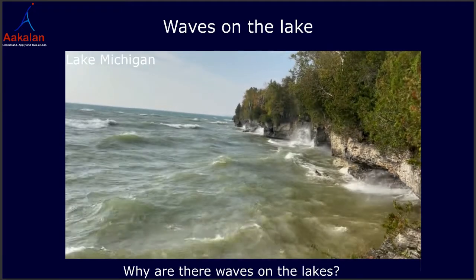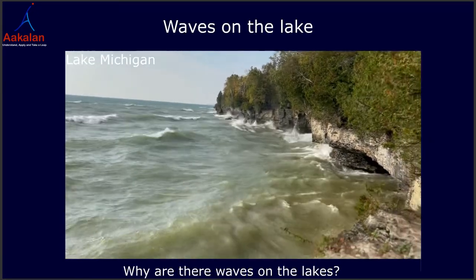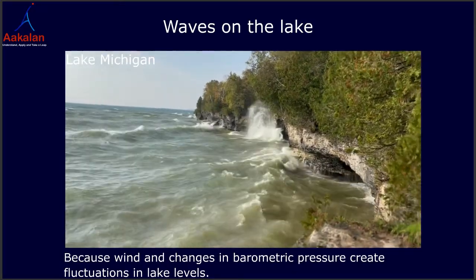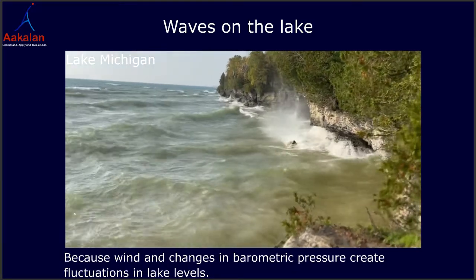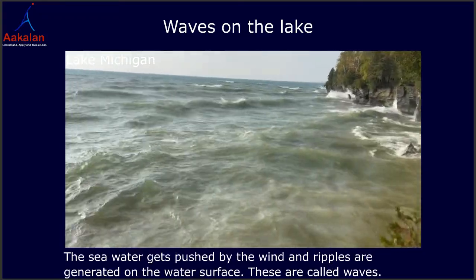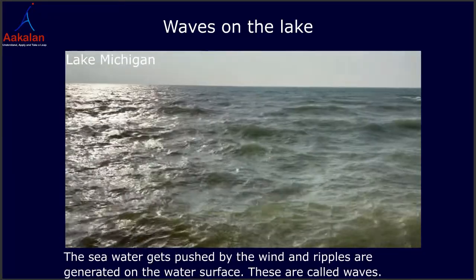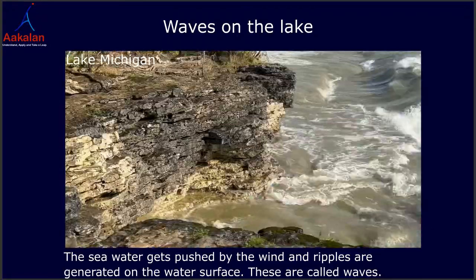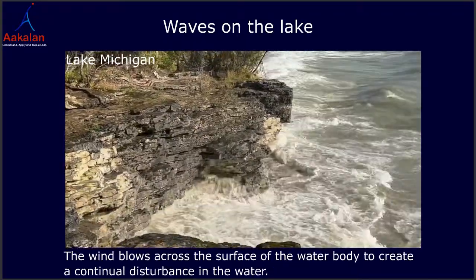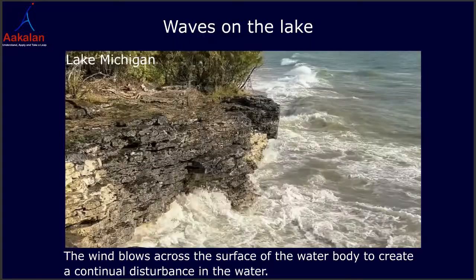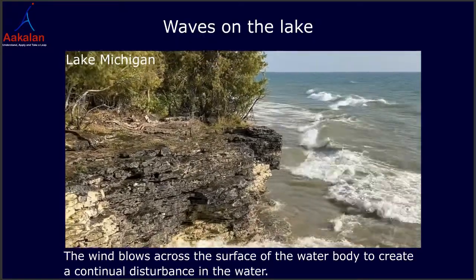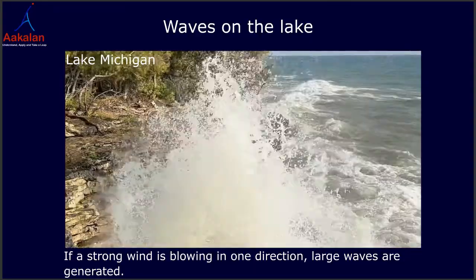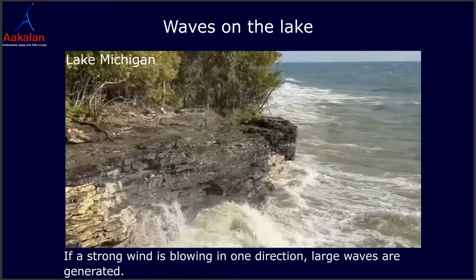Then, why are there waves on lakes? Wind and changes in barometric pressure create fluctuations in lake levels. The sea water gets pushed by the wind and ripples are generated on the water surface — these are called waves. The wind blows across the surface of the water body to create a continual disturbance in the water. If a strong wind is blowing in one direction, large waves are generated.